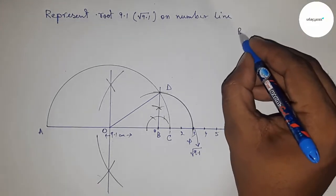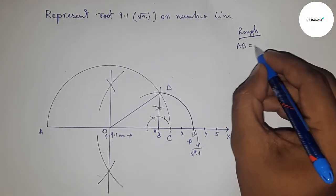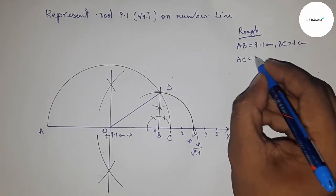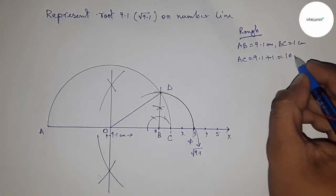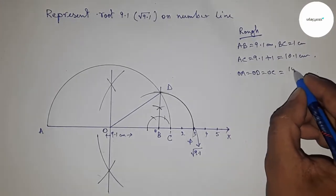Now let's roughly discuss the calculation of root 9.1. Given AB = 9.1 cm and BC = 1 cm, so AC = 9.1 + 1 = 10.1 cm. The radius OA, OD, and OC equal 10.1/2 cm.